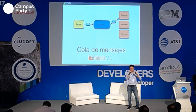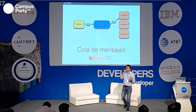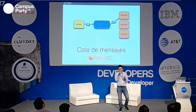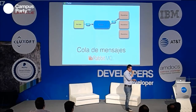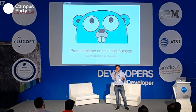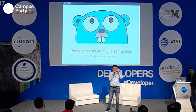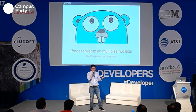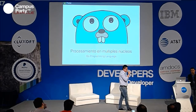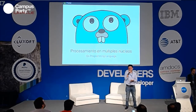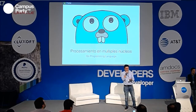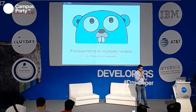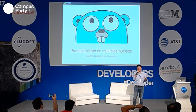Ya tenemos manejado el problema de cola. Ahora quiero manejar el performance y utilizar todo el hardware disponible. Es ahí donde entra Golang, que nos ayuda como lenguaje de programación trabajando increíblemente rápido en multinúcleo. Necesitamos hacer cosas real time y utilizar todo el hardware posible sin gastarle más dinero a la empresa. Eso fue lo que hizo que Live Experience escalara.